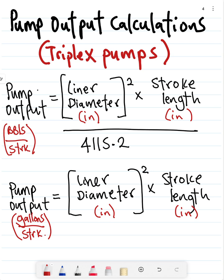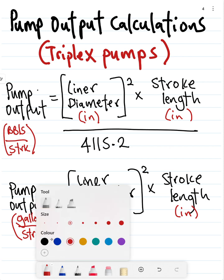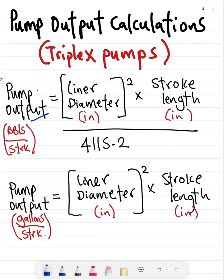In today's video, we'll be looking at pump output calculations for triplex pumps. Very straightforward. To calculate pump output in barrels per stroke, it will be your liner diameter in inches squared times the stroke length in inches divided by 4115.2.